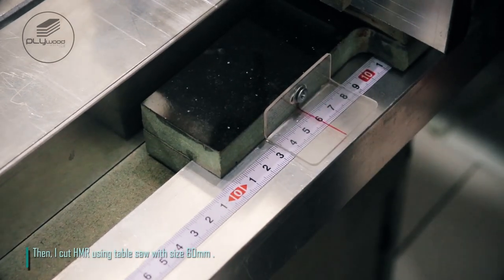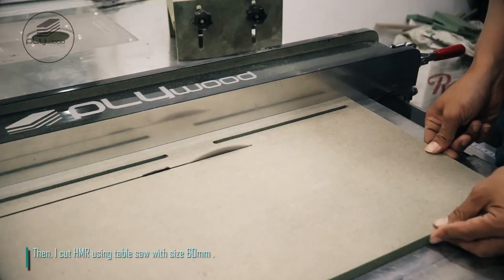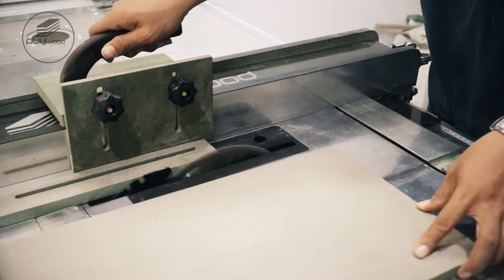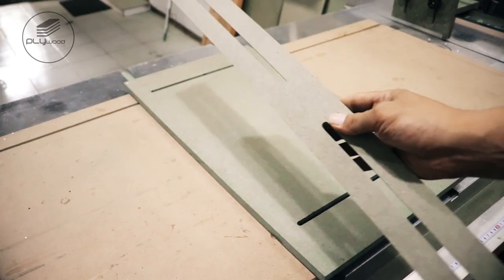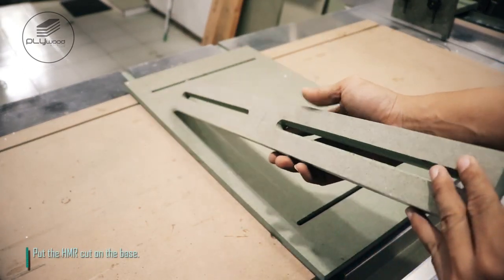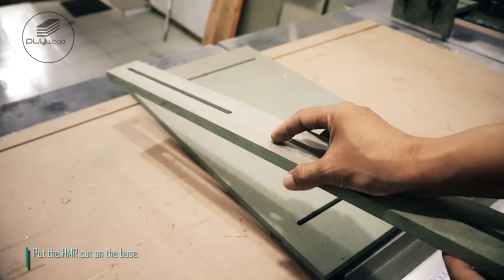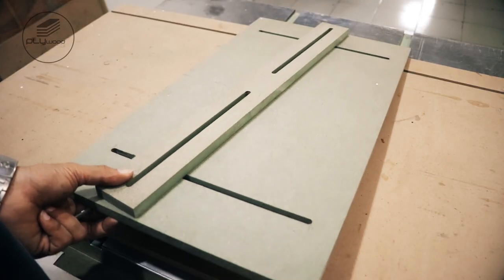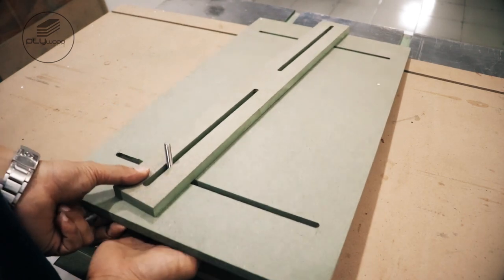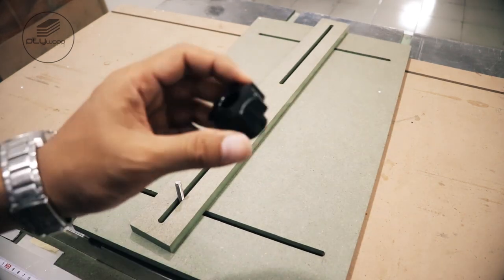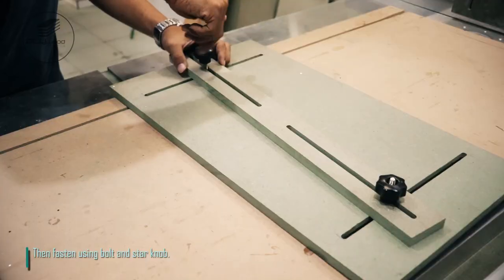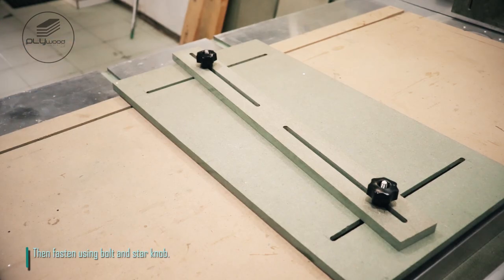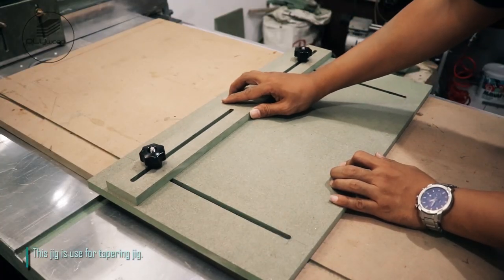Then, I cut HMR using table saw with size 60mm. Put the HMR cut on the base. Then, fasten using bolt and star knob. This jig is used for tapering jig.